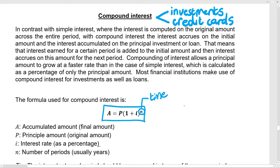I'd like to show you with a very simple example what compound interest does in this formula. Let's take a small amount — let's take R100 — and put it into the simple interest formula. We'll use numbers we can estimate in our heads: let's say 10% and for one year.